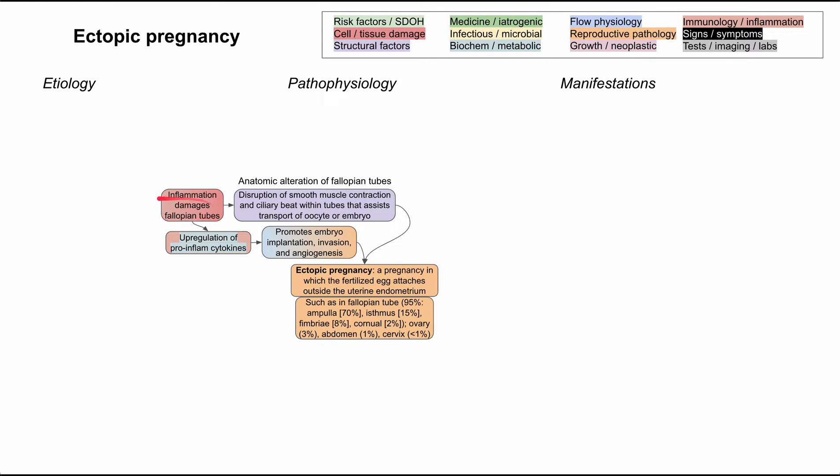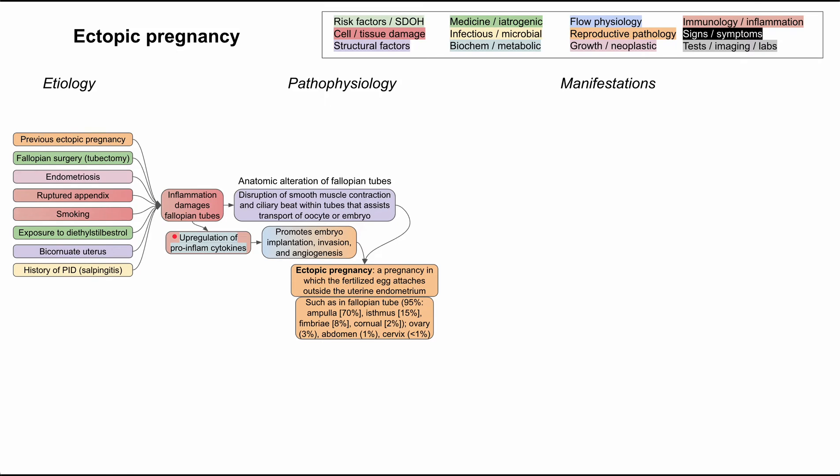What exactly causes the damage in the fallopian tubes — what causes the inflammation? There are several things. Previous ectopic pregnancies can be very inflammatory, especially if they cause a tubal rupture. Fallopian tube surgeries, such as tubectomies, can be very inflammatory. Endometriosis — where endometrial tissue exists outside of the uterus — can be inflammatory and also cause anatomic changes in the reproductive tract. A ruptured appendix can cause this as well. Smoking is a very inflammatory process and has been shown to predispose you to ectopic pregnancies. Exposure to DES, a medicine that used to be given to mothers, could affect the development of the baby's genitourinary tract if exposed in utero — affecting the fallopian tubes and predisposing them to ectopic pregnancies 20-plus years later.